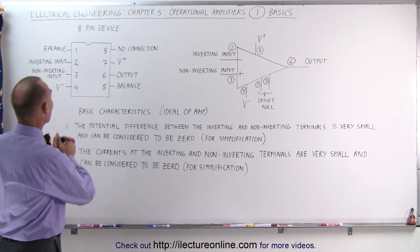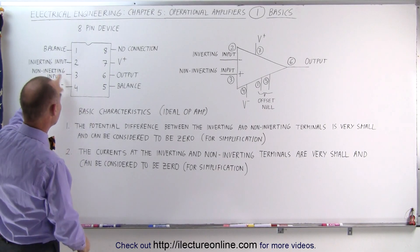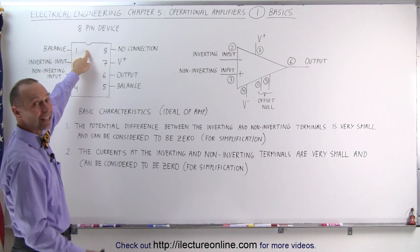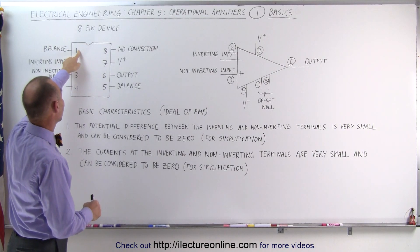Here we have an illustration of what an op-amp is. It's an 8-pin device, numbers 1 through 8. Notice the little notch right here, which indicates the correct location of pin number 1.